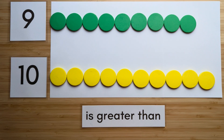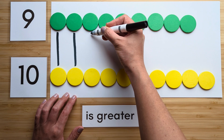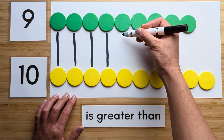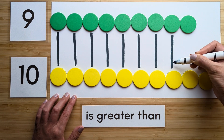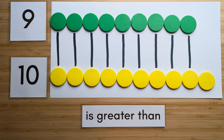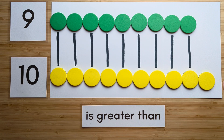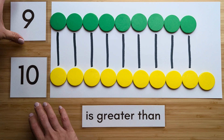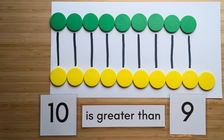Now let's compare. Match them up. Which one has extra? Ten has extra. Ten is greater than nine. Nice job. Clear off your boards to try the next one.